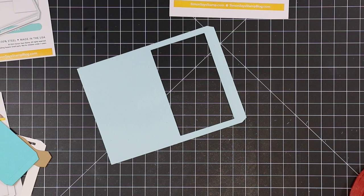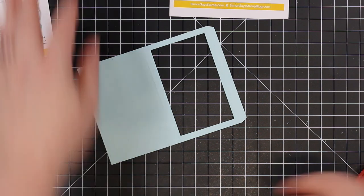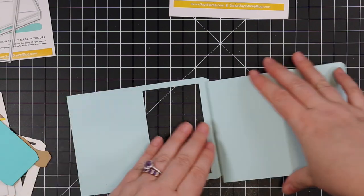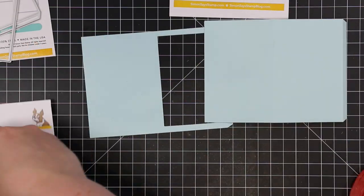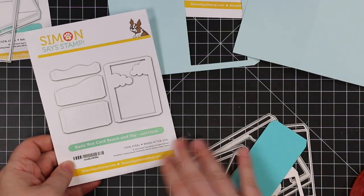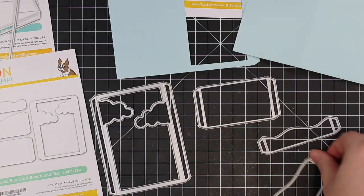You have two window options with that die set, a larger one and smaller one. I used the larger one and die cut a window out of one of the panels, so I've got two panels here, one with window, one without.